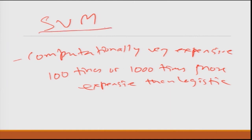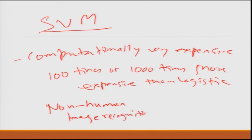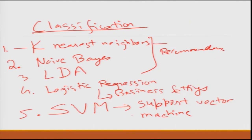SVM is used a lot in non-human cases such as image recognition, but for most human cases logistic regression is still much more popular and much easier to do. If your data set is small you can try SVM — it will take some time, but in R or Python it is just one line of code. That covers the major classification algorithms, along with various modifications and complex systems built on top of them.